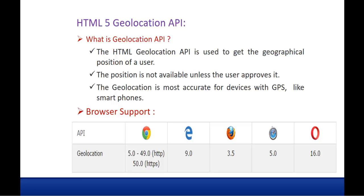Keep in mind this important point: the position is not available unless the user approves it. We're going to understand this sentence when we code in Visual Studio and run the application. Also, the Geolocation API is more accurate for devices with GPS, like smartphones.